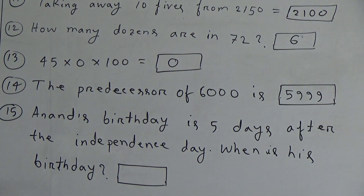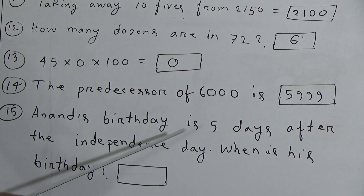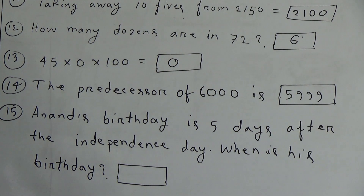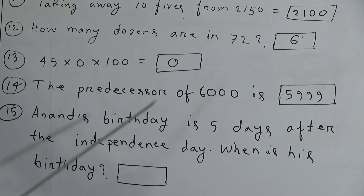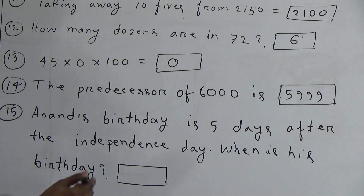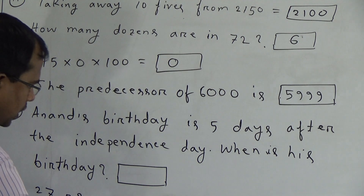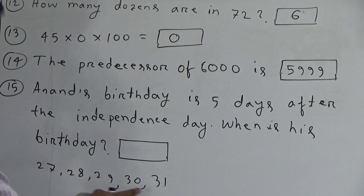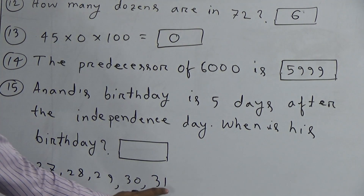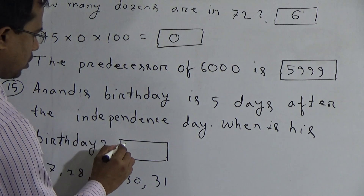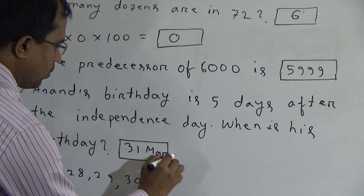Fifteenth question: Ananda's birthday is 5 days after independence day. When is his birthday? Independence day is 26 March. So 5 days after 26 March: 27, 28, 29, 30, and March has 31 days so we can take 31 also — counting 1, 2, 3, 4, 5. So 5 days after 26 March it will be 31 March.